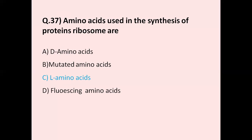Question number 37: Amino acids used in the synthesis of protein by ribosomes are — option A D amino acids, option B mutated amino acids, option C L amino acids, option D fluorosine amino acids. The correct answer is L amino acids. L amino acids are found in proteins in the body and play a role in metabolism and nutrition.